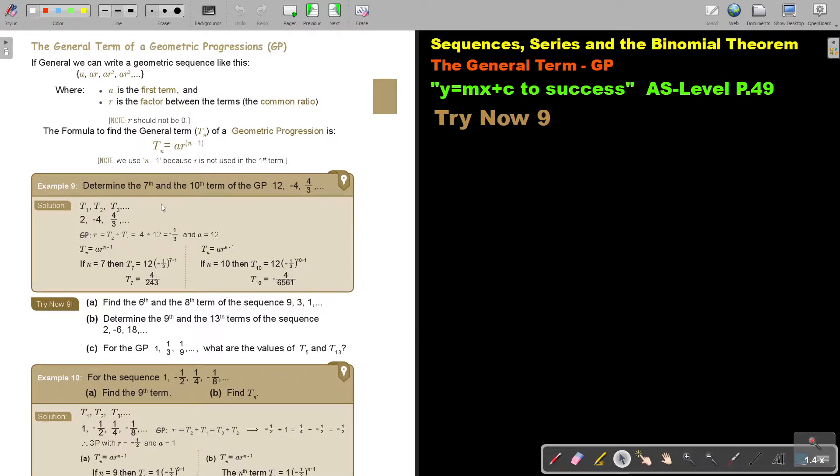Okay, but let's look at an example. Determine the 7th and the 10th term of the GP. It seems to me there's a point here, there should have been a 12. So, if I start, it's a GP, so to get that value of R, I can just take T2 divide by T1.